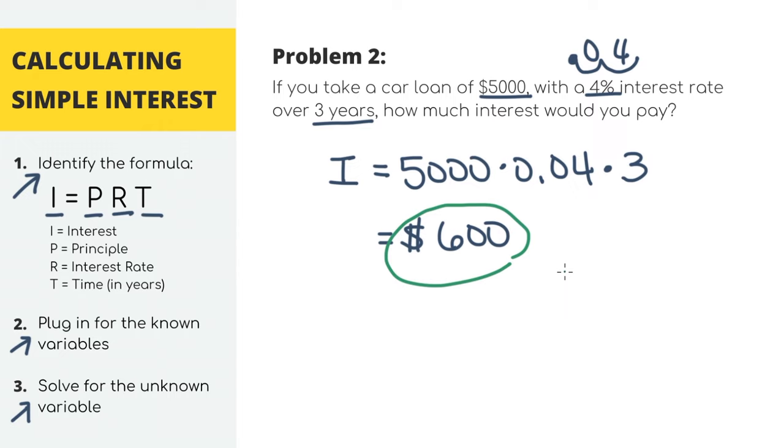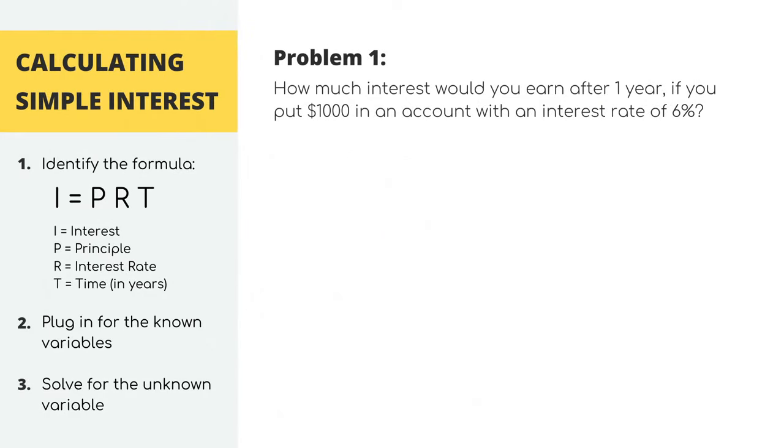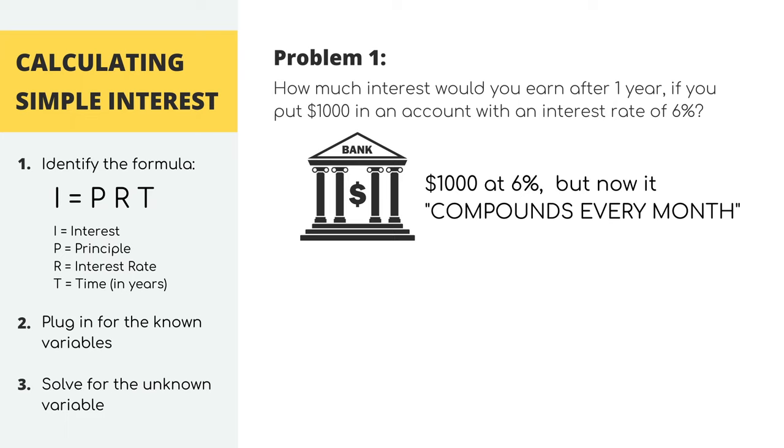Now, what we just learned is called simple interest. There's also something called compound interest, where you're earning interest on top of your interest. So for example, if we go back to the scenario where we put $1,000 in the bank with 6% interest, let's say the bank uses compound interest and it compounds every month.